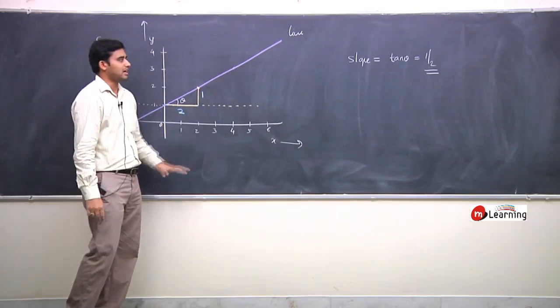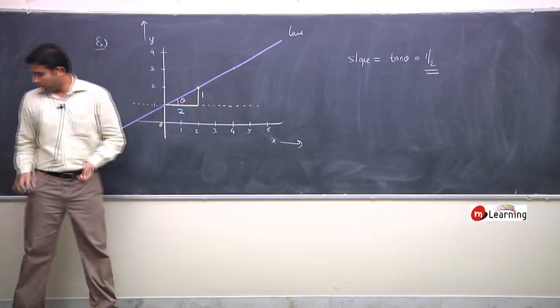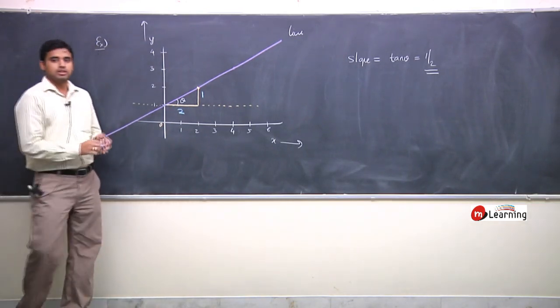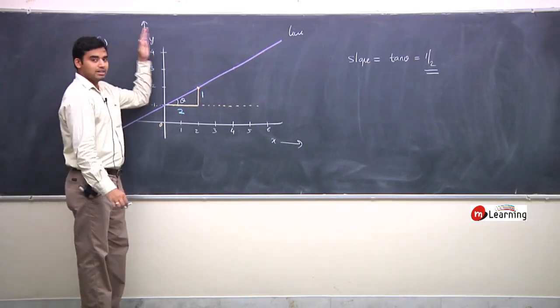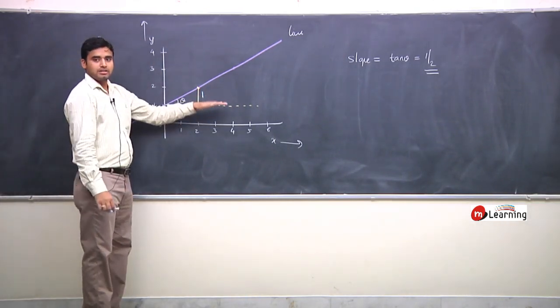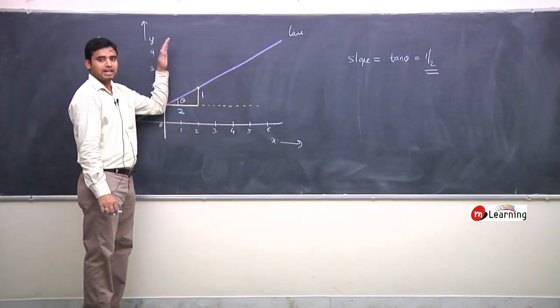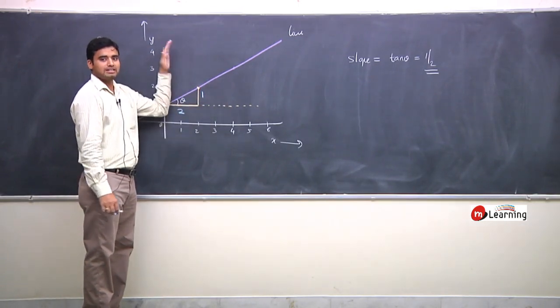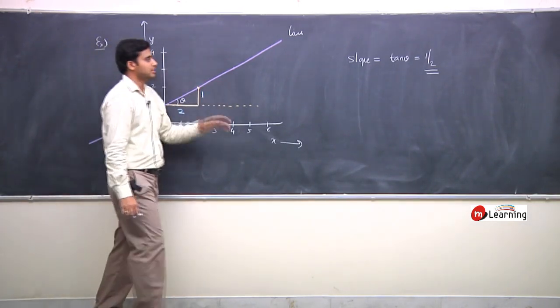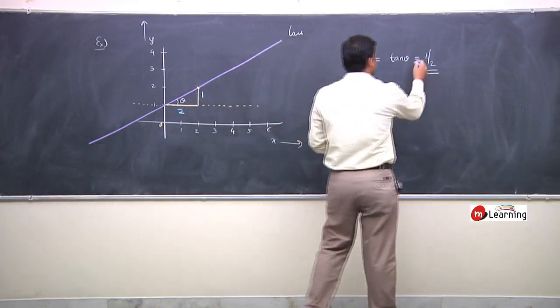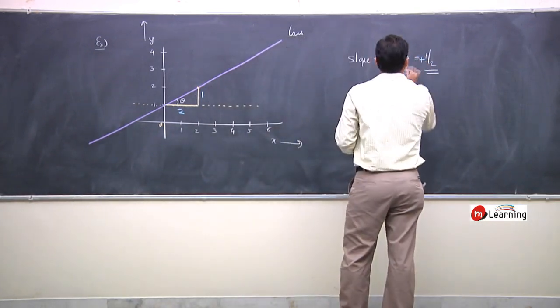Slope of the line is half. Positive or negative? You can make a right-angle triangle — that means the slope would be positive.